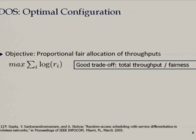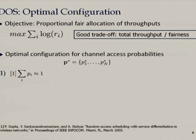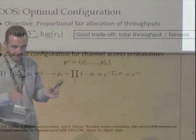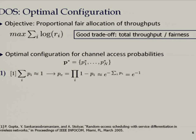For us, 'optimal' means proportional fairness — we want to maximize the sum of logs of throughputs, which gives a good tradeoff between fairness and total performance. Without boring you with the maths: for the access probability, you always want to ensure in random access that the sum of all access probabilities equals one, which means the empty probability always needs to be 1/e. That's an invariant in our case.